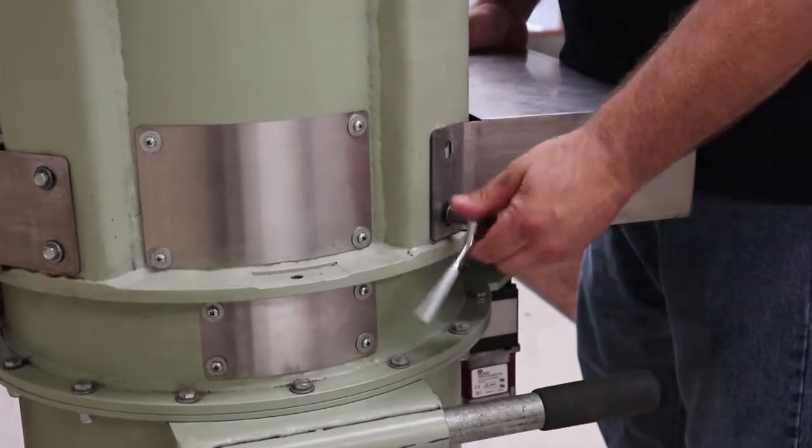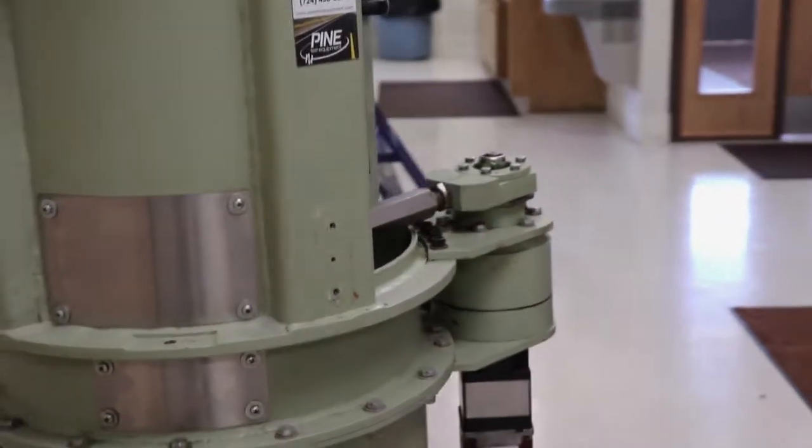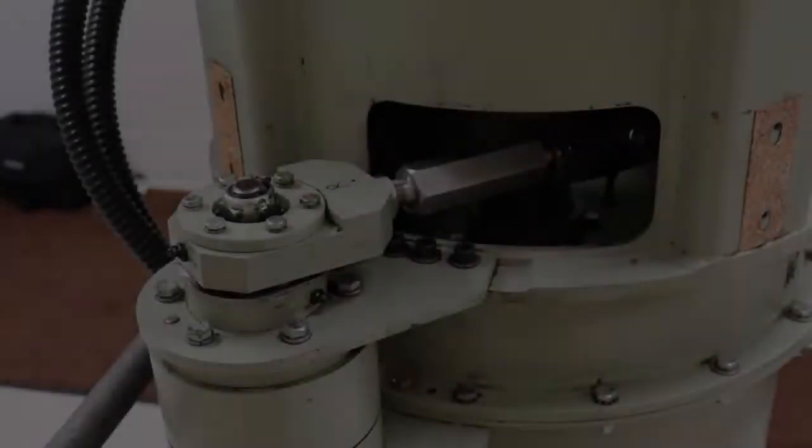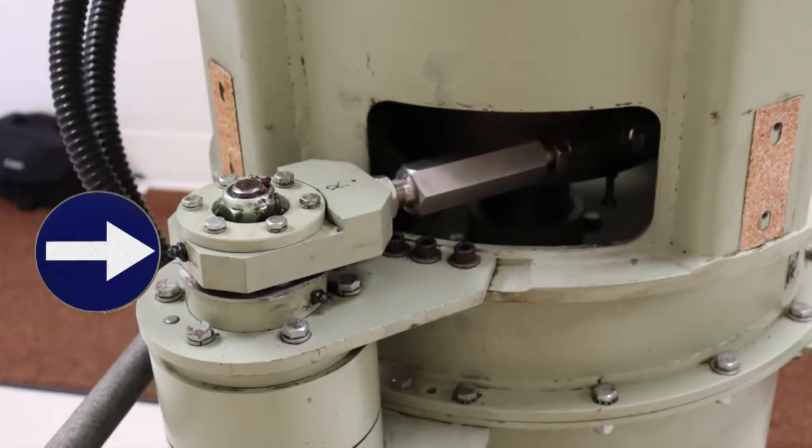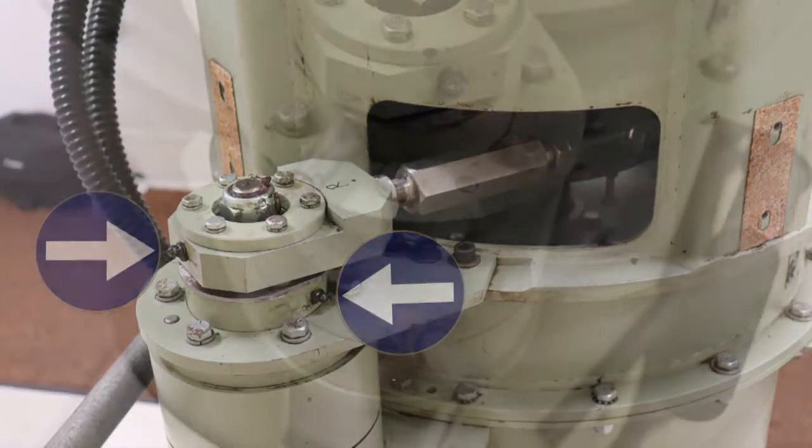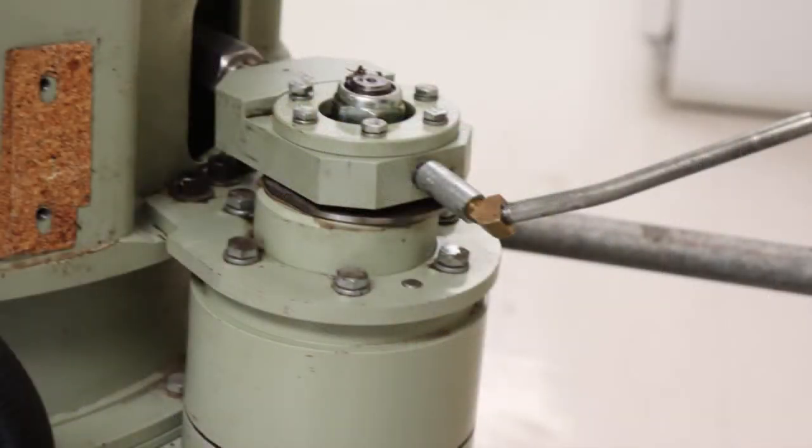Begin by removing the front and rear actuator arm covers and screws. Grease both the actuator arm grease fitting as well as the actuator arm crank grease fitting in the front and rear of the machine.